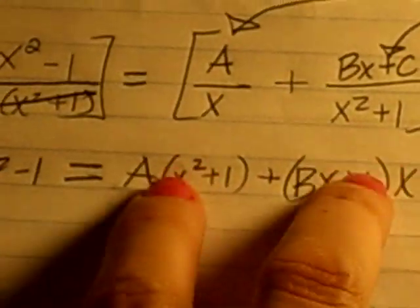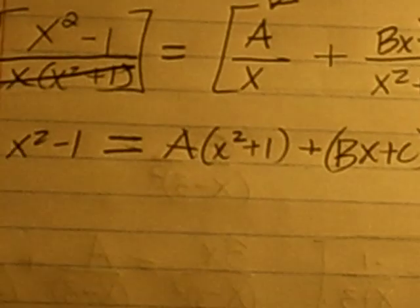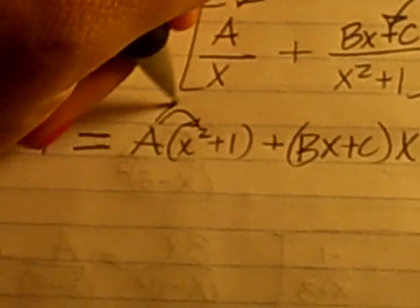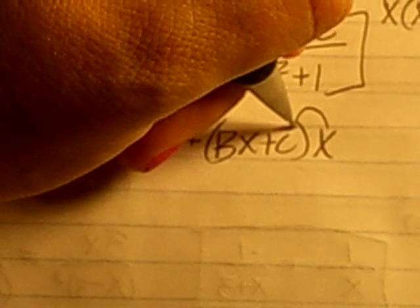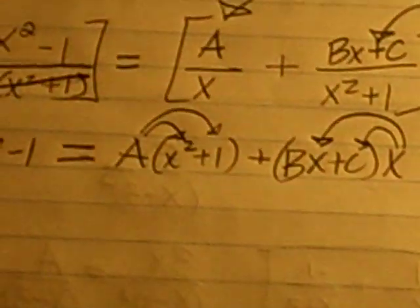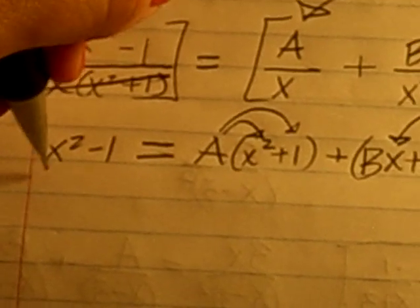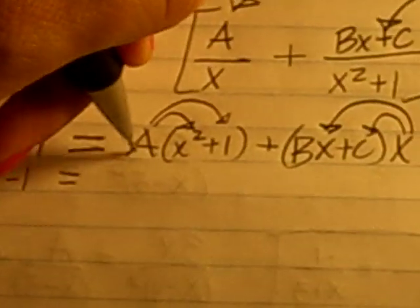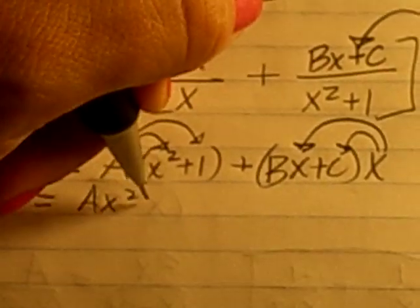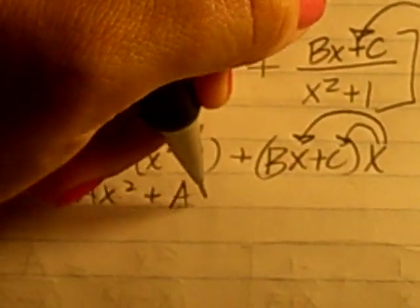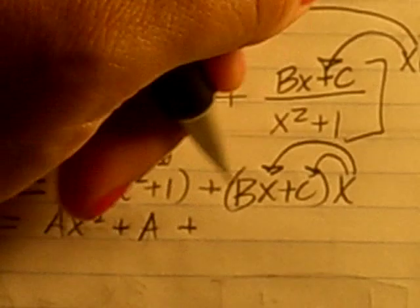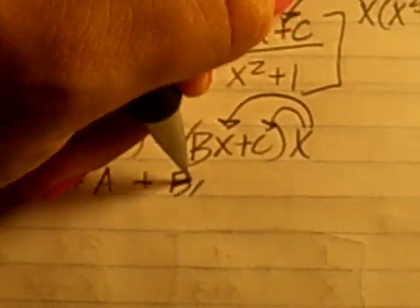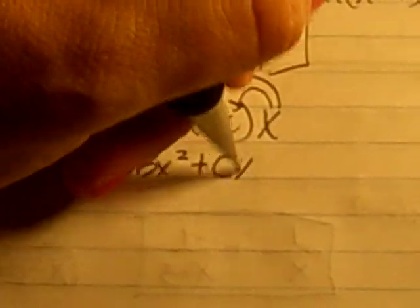Okay, I'll go ahead and simplify the right-hand side by distributing and getting rid of the parentheses, and then I can see my next step, which is to equate the terms. So on the left side, I still have x squared minus 1, and on the right side, I have A times x squared plus A plus, over here, I just have to distribute the x. So I have Bx squared plus Cx.